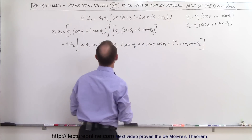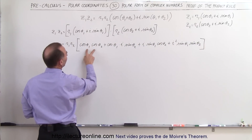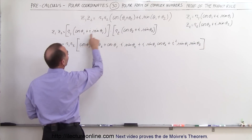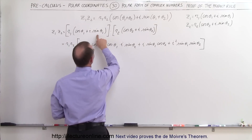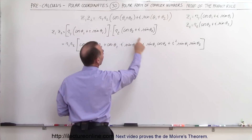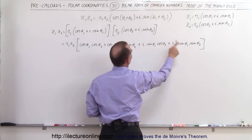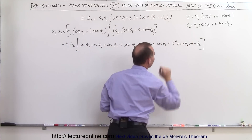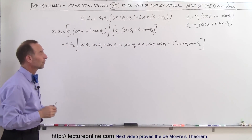Let's quickly check to see if we have that correct: cos θ1·cos θ2, cos θ1·i·sin θ2, i·sin θ1·cos θ2, and i²·sin θ1·sin θ2. So far so good — that's the full multiplication.